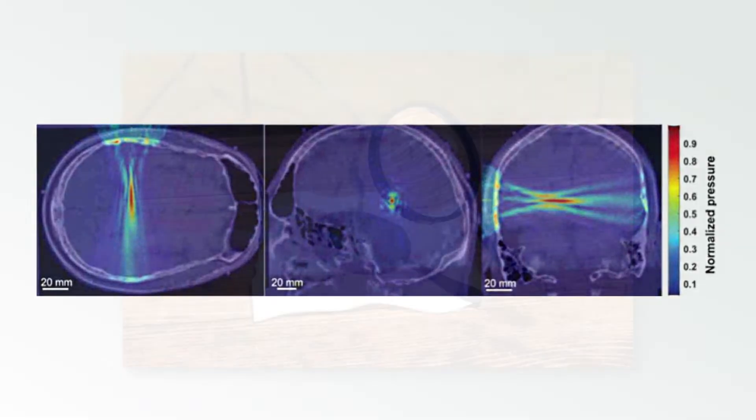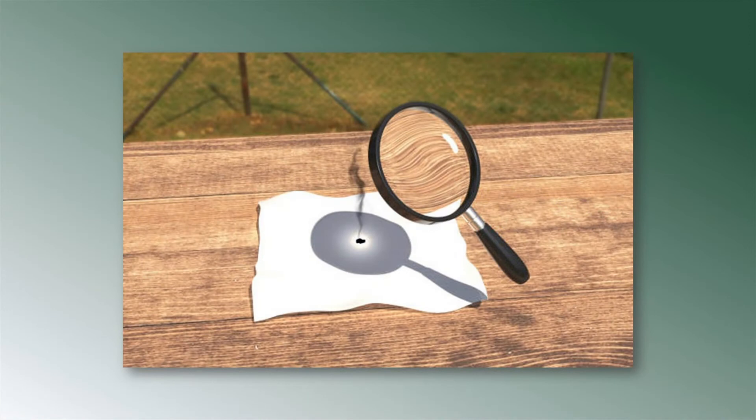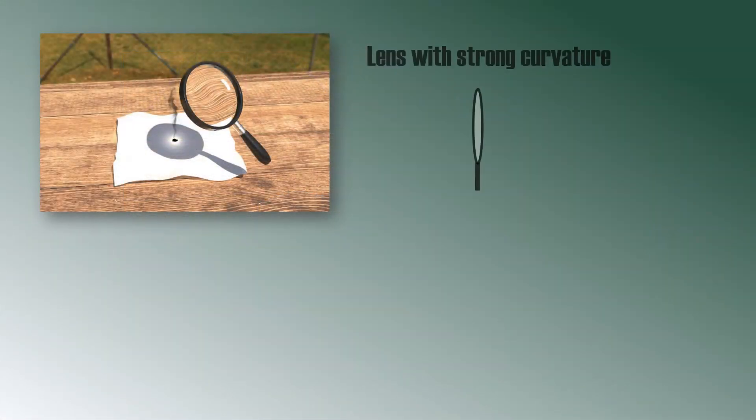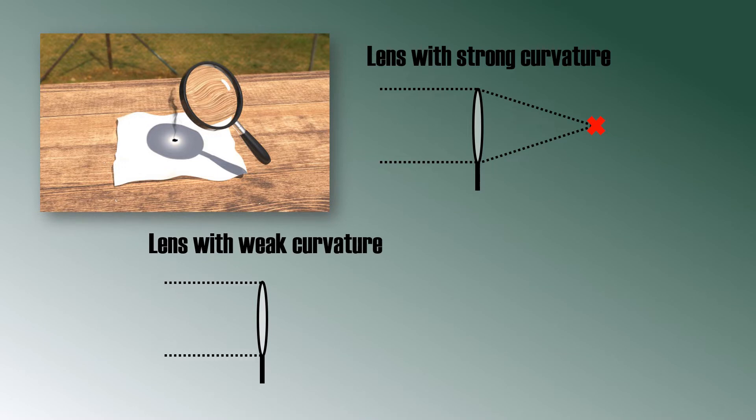As an analogy, let's look at a magnifying glass. Because of the curvature of the lens, incoming light will be focused to a specific spot. If the curvature is strong, then the focus point will be close by. But if the curvature is not so strong, the focus point will be far away. The same principle holds for TFUS, except that it does not work with light, but with ultrasound waves.